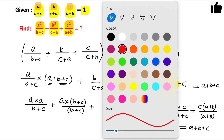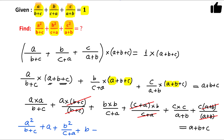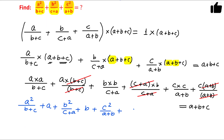Now the good thing is we can cancel some terms. (b+c)/(b+c) cancels, (c+a)/(c+a) cancels, (a+b)/(a+b) cancels. So what is left? We have a²/(b+c) plus a, then b²/(c+a) plus b, then c²/(a+b) plus c, and this equals a+b+c.